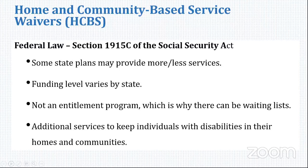They get the same services if they're under the age of 21, which includes doctor's appointments and prescriptions. If they're under the age of 21, they get therapy services — those things are covered under Medicaid. But in order to get a home and community-based service waiver, the individual needs to require additional services above what is already covered.